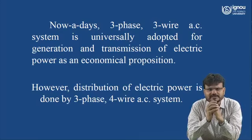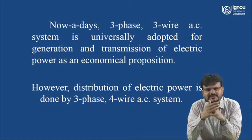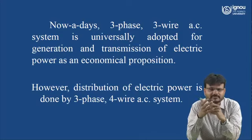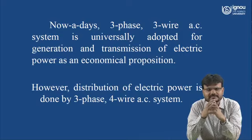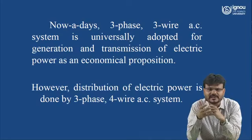Nowadays, 3-phase 3-wire AC system is universally adopted for generation and transmission of electric power as an economic proposition. The electrical power generated at a generating station by an alternator is 3-phase power, generated via R, Y, B — red, yellow, and blue — the three-phase wires. This is generated and transmitted with a 3-phase 3-wire system. However, the distribution of electric power is done by a 3-phase 4-wire AC system, where the fourth wire is a ground wire used for protection purposes.